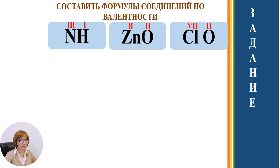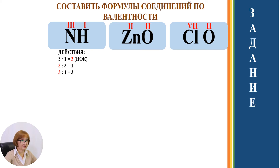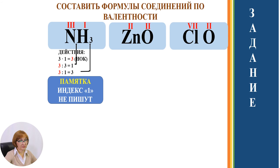Выполните следующее задание: составьте формулы соединений по валентности. Наши действия: умножаем валентность азота и водорода друг на друга, получаем 3 — наименьшее общее кратное. Делим 3 на валентность азота 3, получаем 1. 3 делим на 1, получаем индекс атома водорода 3. Помните, ребята, что индекс 1 в формулу вещества не пишут.